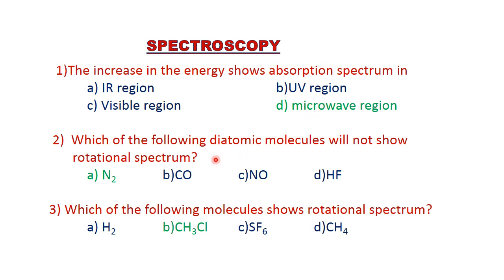Which of the following diatomic molecules will not show rotational spectrum? For rotational spectroscopy, the important point is that molecules must possess a permanent dipole moment. N2 is a homonuclear diatomic molecule, so its permanent dipole moment is equal to zero. Therefore, N2 is rotationally inactive or microwave inactive. The answer is N2.